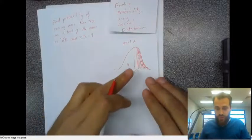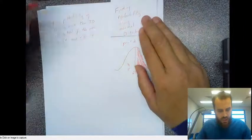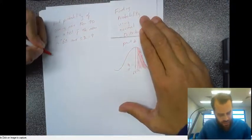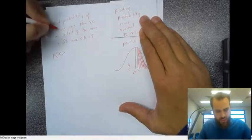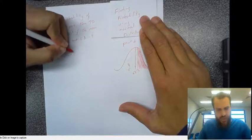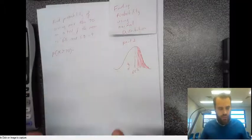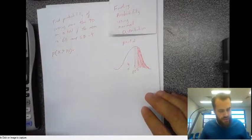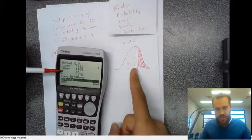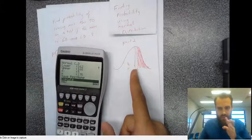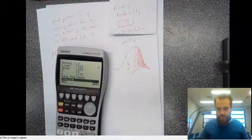Now that we've drawn it and have a good idea of what it looks like, we can make sure that when we do it on our calculator we get a similar result. There is a problem though. The probability that x is greater than 70 — when we do this on our calculator, it asks us for a lower bound and an upper bound. The lower bound is simple: it's 70.